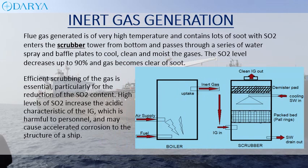Flue gas generated is of very high temperature and contains lots of soot with sulfur dioxide. It enters the scrubber tower from the bottom and passes through a series of water sprays and baffle plates to cool, clean, and moisten the gases. The sulfur dioxide level decreases by up to 90% and the gas becomes clear of soot. Efficient scrubbing is essential, particularly for the reduction of sulfur dioxide content, as high levels increase the acidic characteristic of the IG, which is harmful to personnel and may cause accelerated corrosion to ship structure.